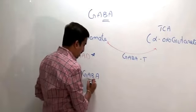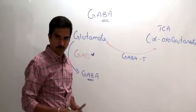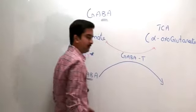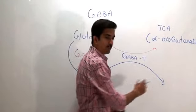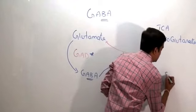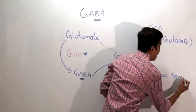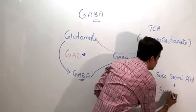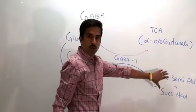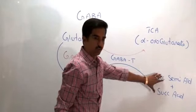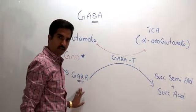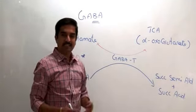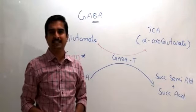After GABA performs its actions, it is metabolized by the same enzyme GABA-transaminase, which produces two end products: succinic semi-aldehyde and succinic acid. This is how the synthesis and metabolism of GABA takes place.